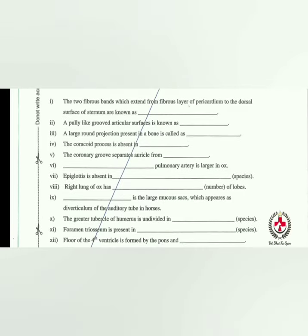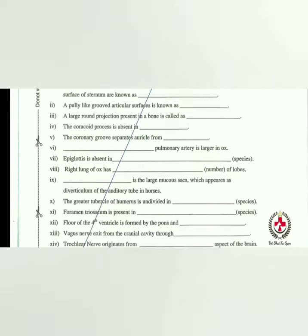Next: the coracoid process is absent in the dog. The coracoid process is a very small projection in the medial aspect of the scapula, which is absent in dogs.